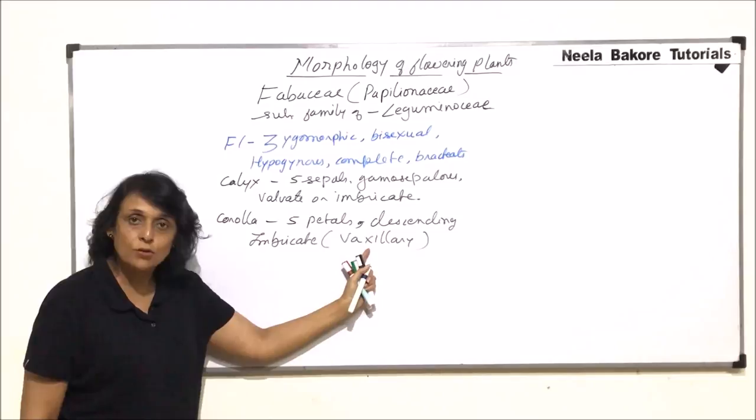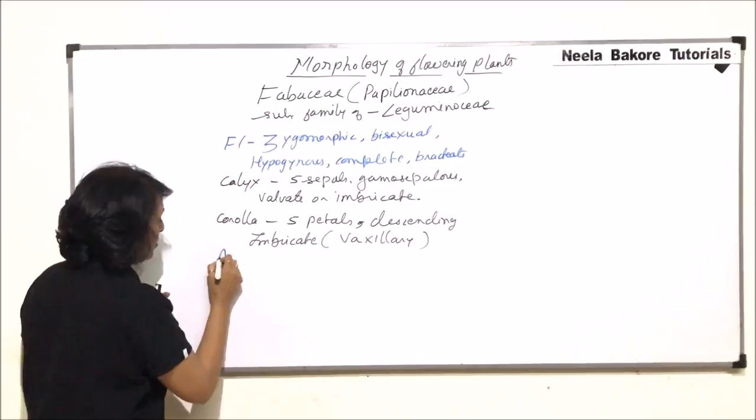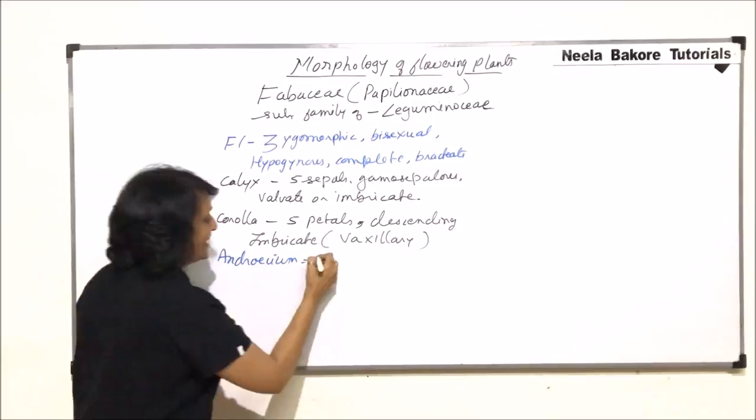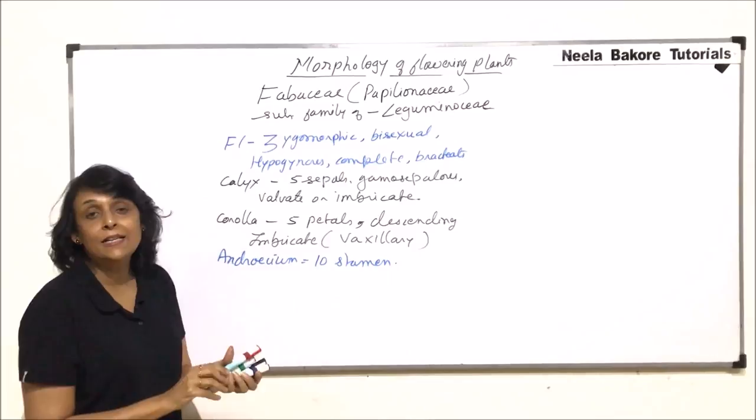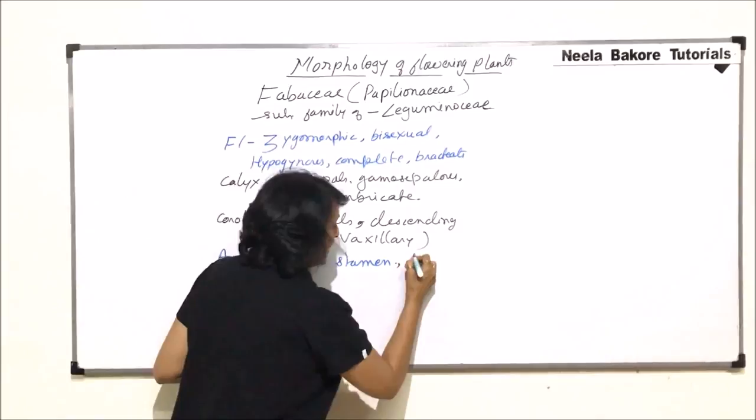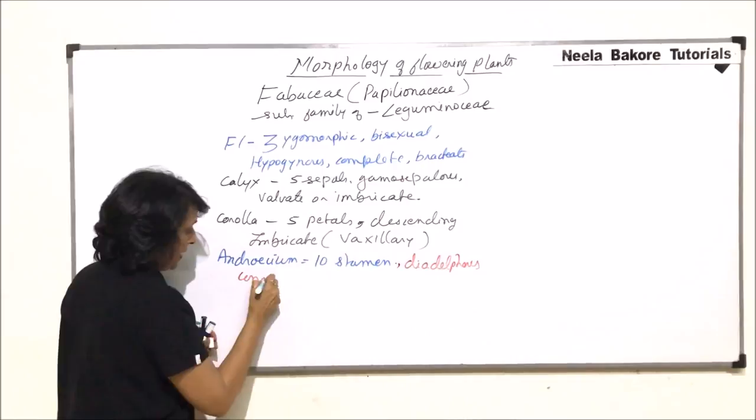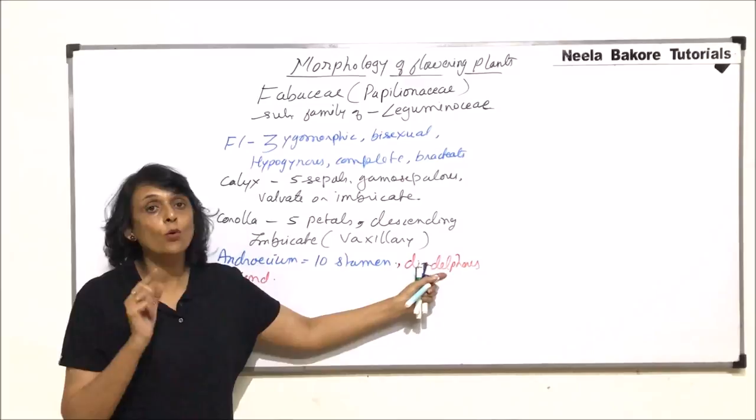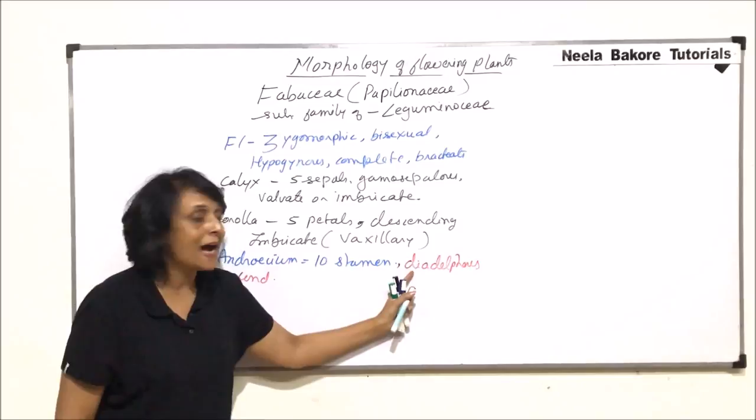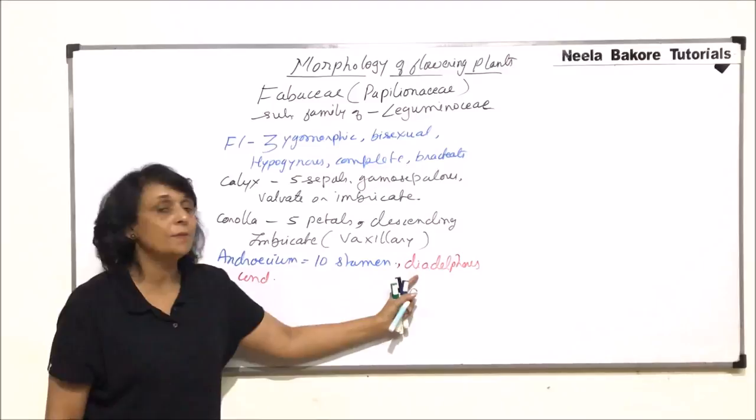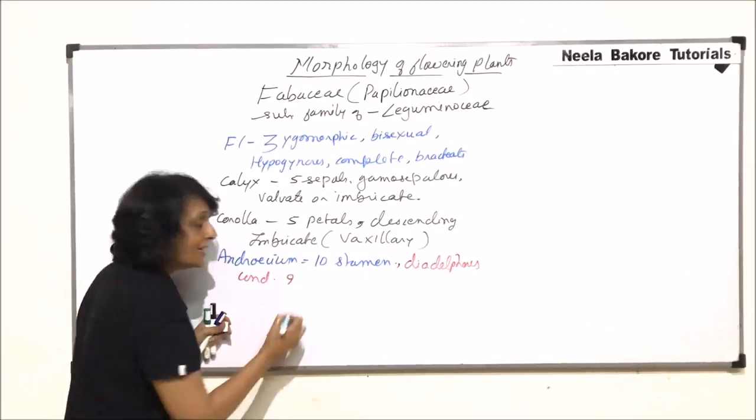Now corolla is this type. Fused or free? Because it is a combination. The upper one, that is posterior one is free, not fused with anything. The two lateral are also free. Only the two anterior ones are going to be fused. So here we are not writing polypetalous or gamopetalous. In this case it is already understood that only two lower or anterior ones are fused. Now coming to androecium. Androecium, there are total 10 stamens. And now comes the identifying feature of this family. These stamens show diadelphous condition.